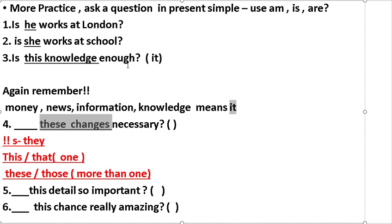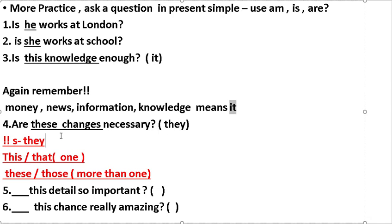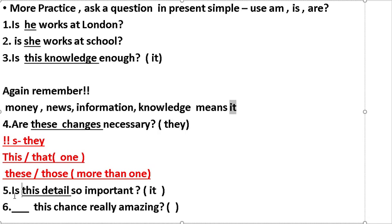'This changes' — 'changes' is plural, so we use 'are': Are these changes necessary? 'This/that' refers to one thing (singular → 'is'). 'These/those' means more than one thing (plural → 'are'). Example: Is this detail so important?